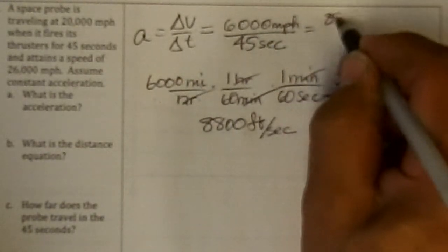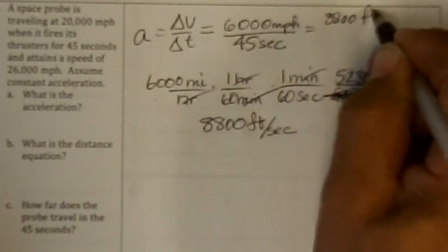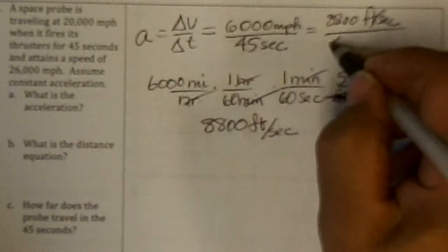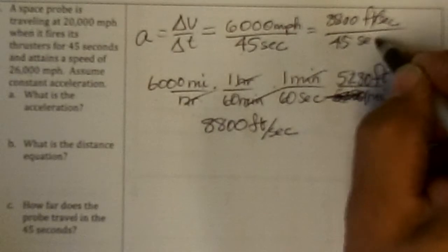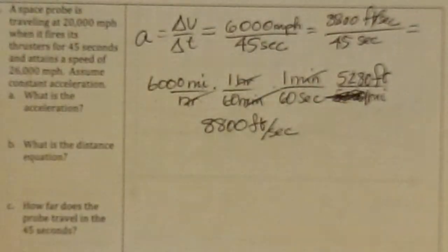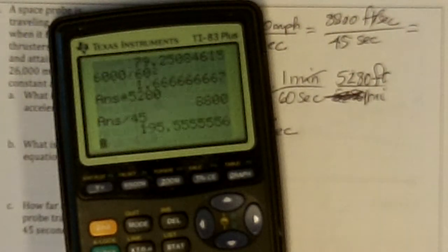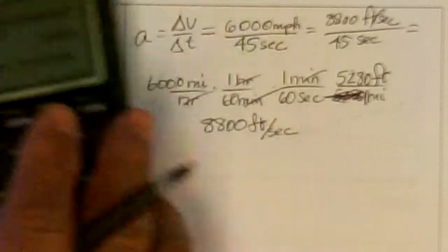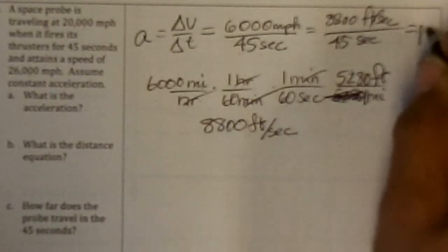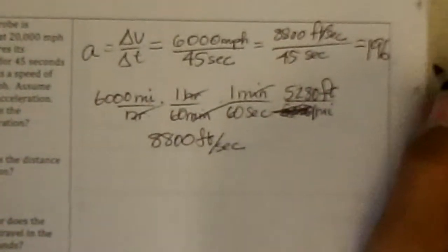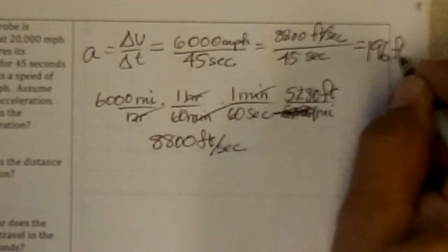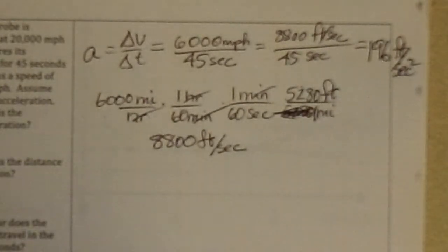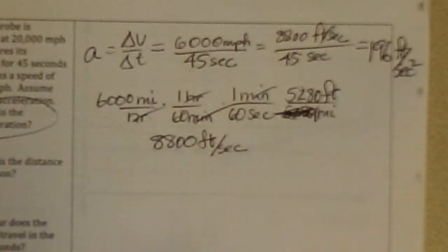And that's the numerator. So I got 8,800 feet per second divided by 45 seconds creates 195.5555, 196 feet per second. So that's the answer to A.